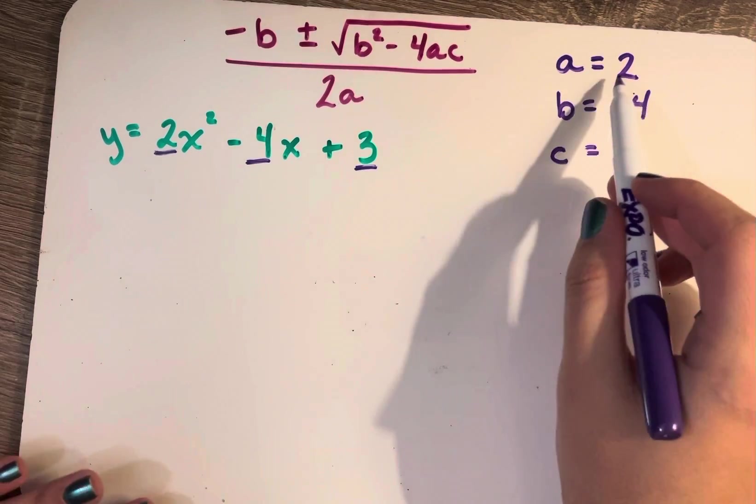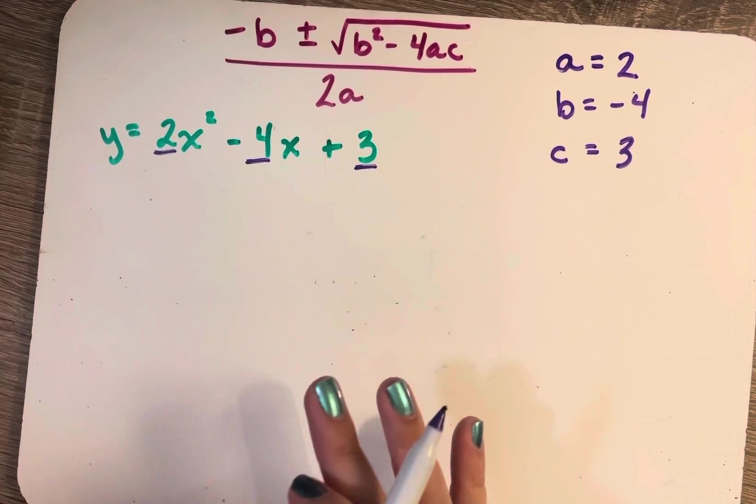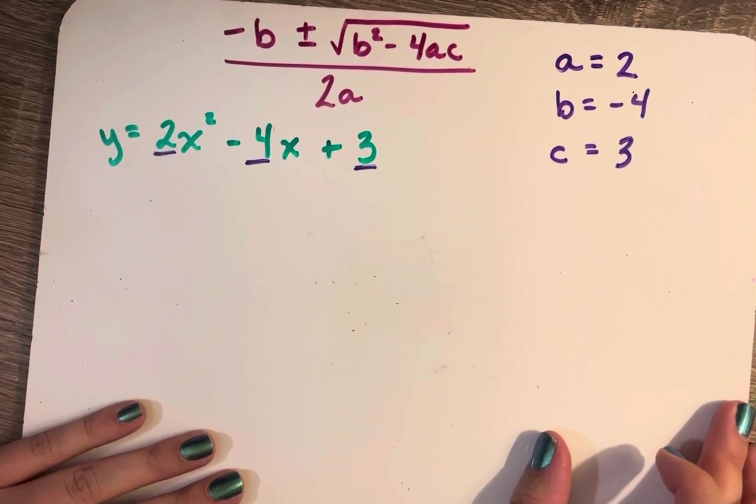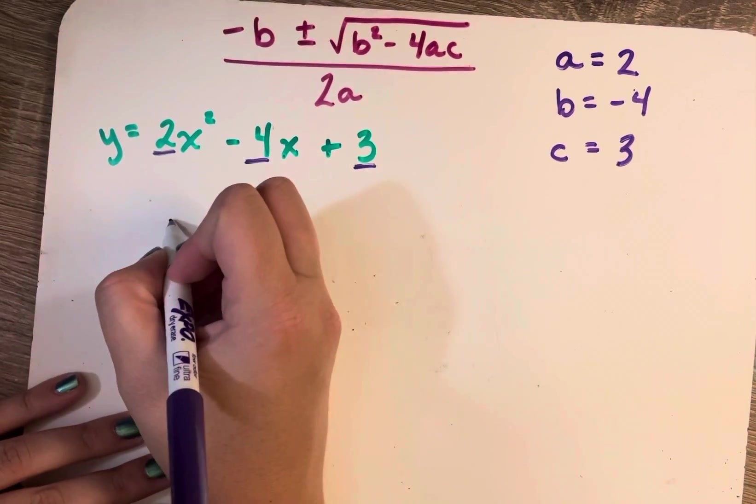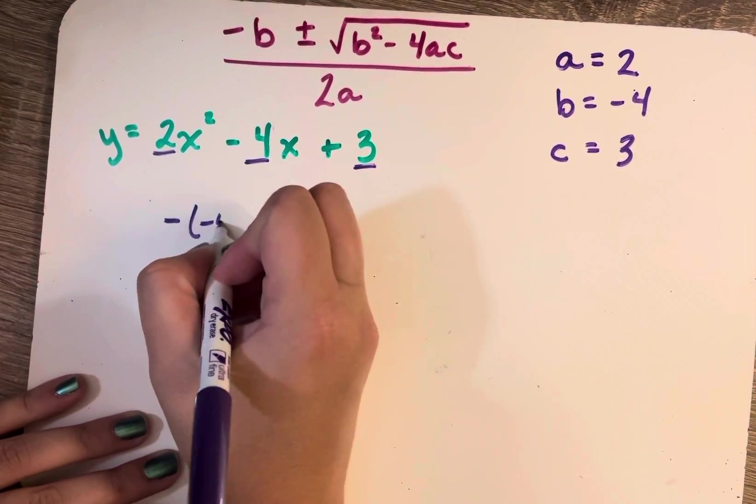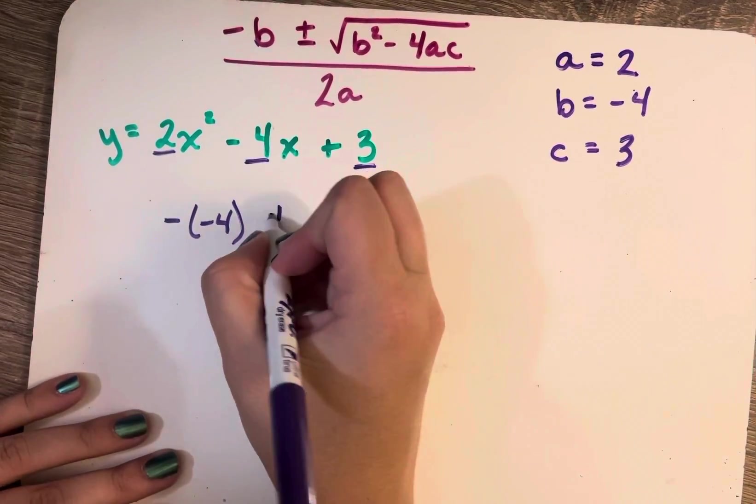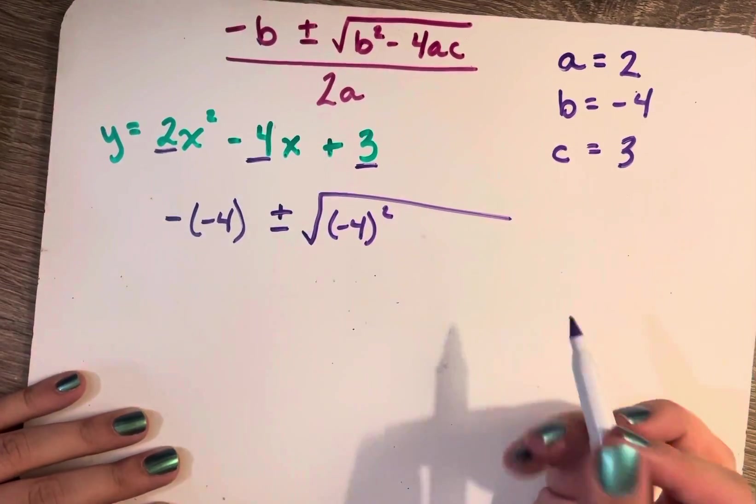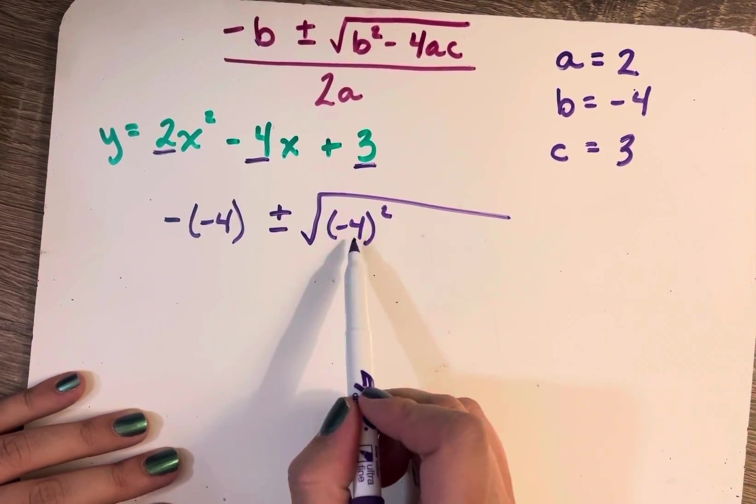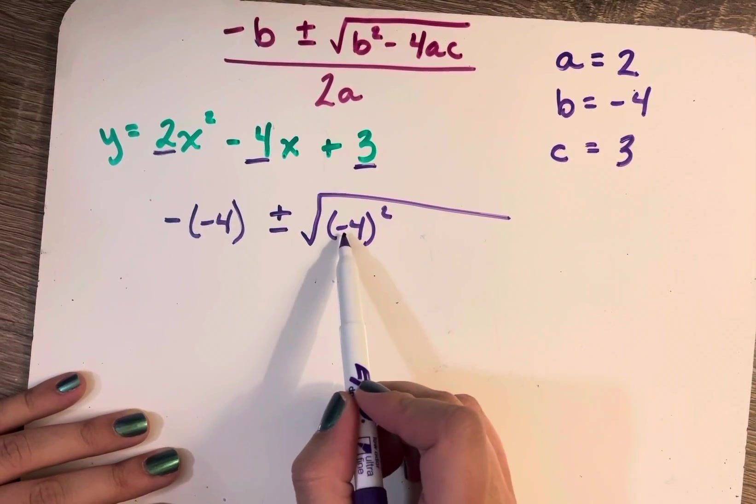So let's plug all of these in. I'm going to carefully substitute them, and I'm going to write everything out so that I don't start doing too much in my head and making any mistakes. So first we have negative negative 4, plugging in negative 4 for b, plus or minus the square root of negative 4 squared. Really important that I'm using parentheses here because the entire value of b is being squared, including the negative.